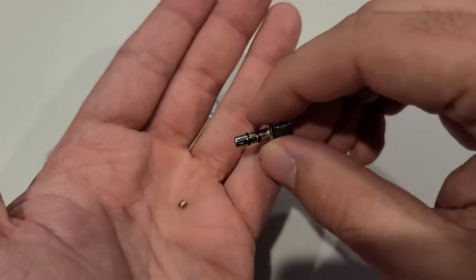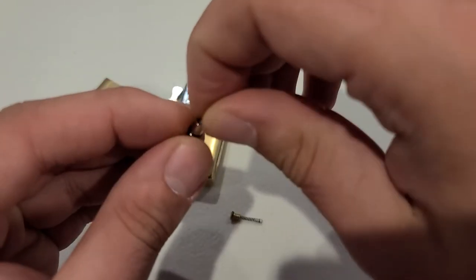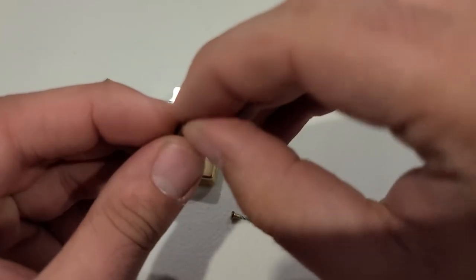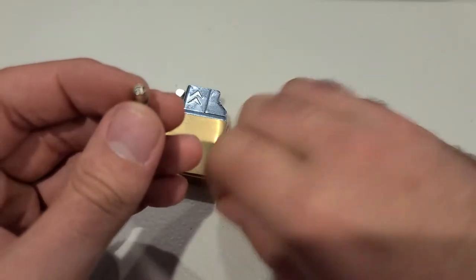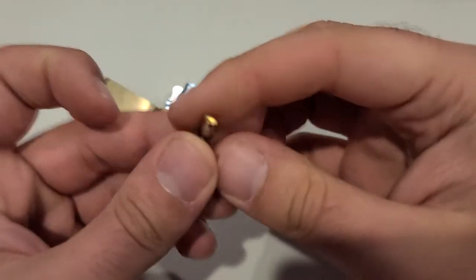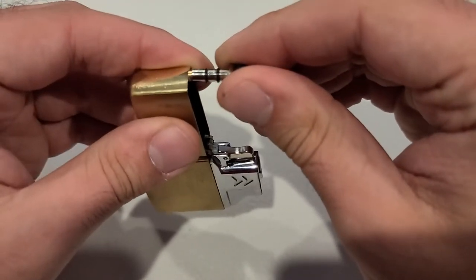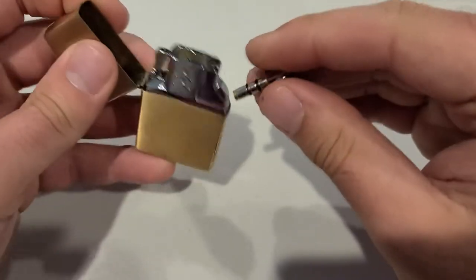And the little flint, and then you can just reassemble this. You can tighten this down using the little edge there.